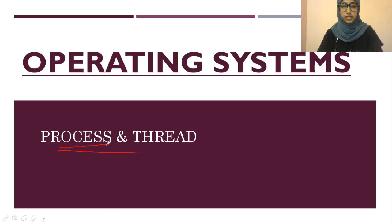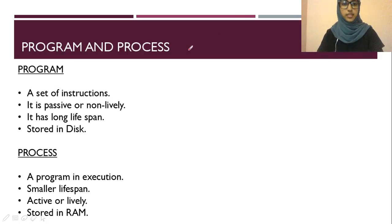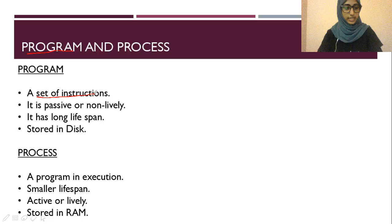Back to our session — we are going to discuss about processes and threads. But first, before we discuss processes, we need to discuss what a program is. A program is a set of instructions and it is passive. For example, if you write a C program with a main function and a printf 'Hello World' statement — that is a program. It's a set of instructions and has no life.